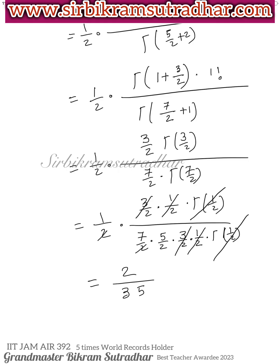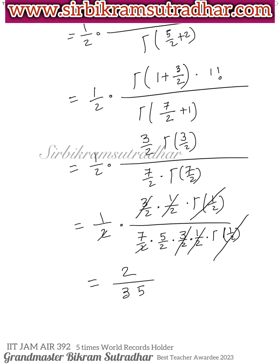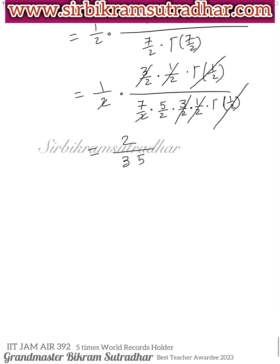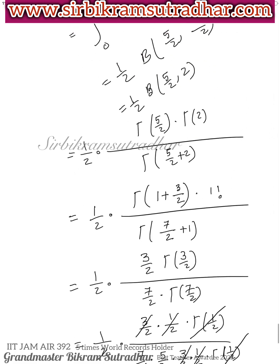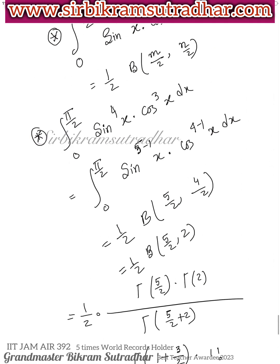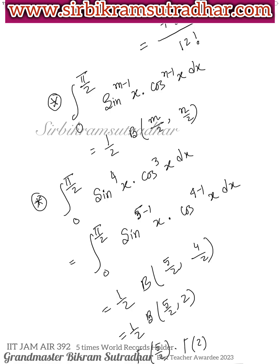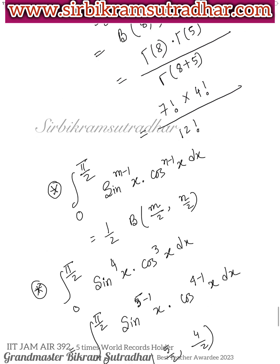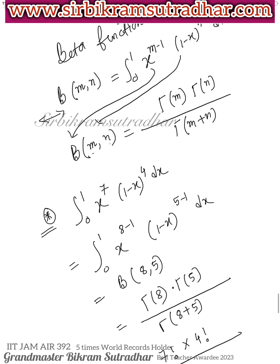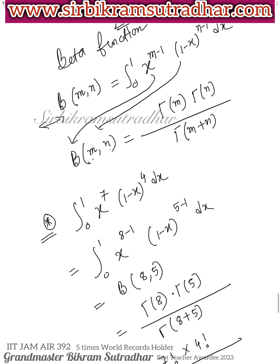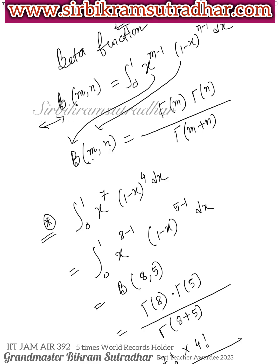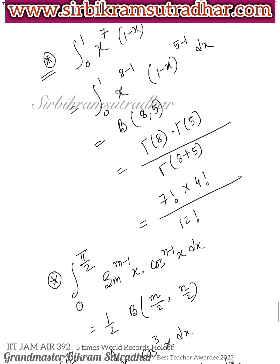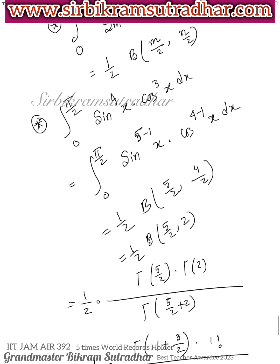The final answer is 2/3. In this video, we have solved many questions using Gamma and Beta functions — the concepts, the main formulas, and worked examples. We have solved everything.